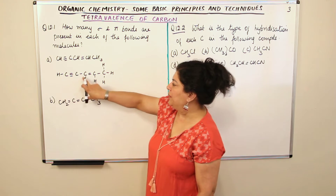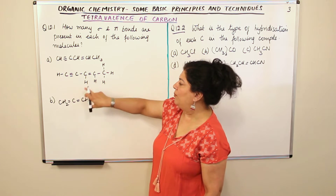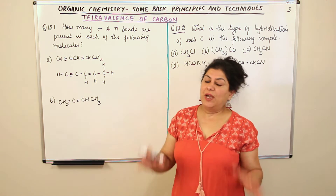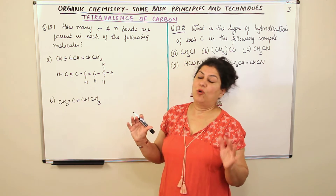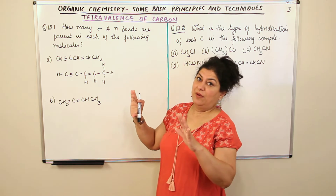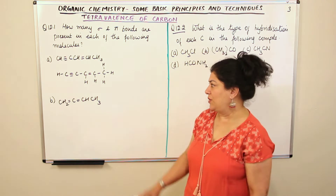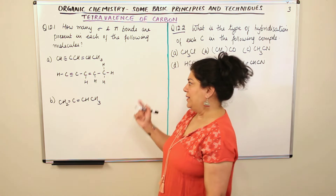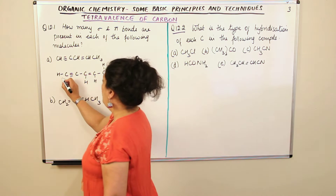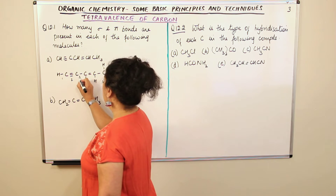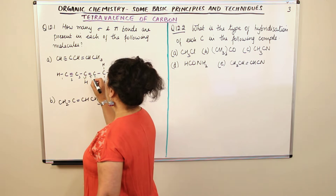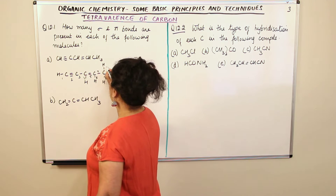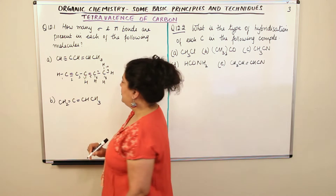Now let us count the sigma bonds by going through each bond in the expanded structure: one, two, three, four, five, six, seven, eight, nine, and ten. So there are ten sigma bonds in this molecule.